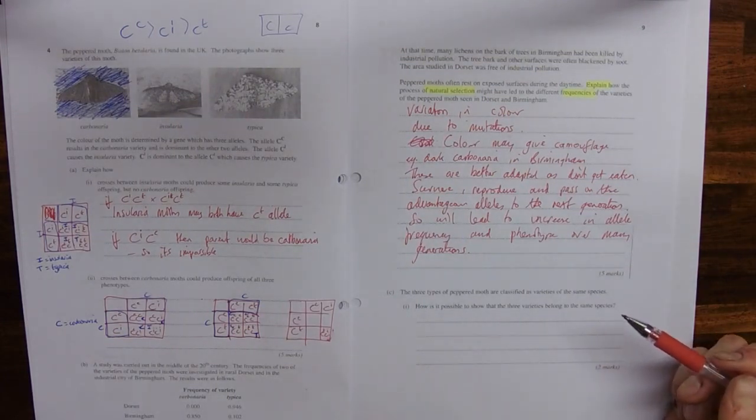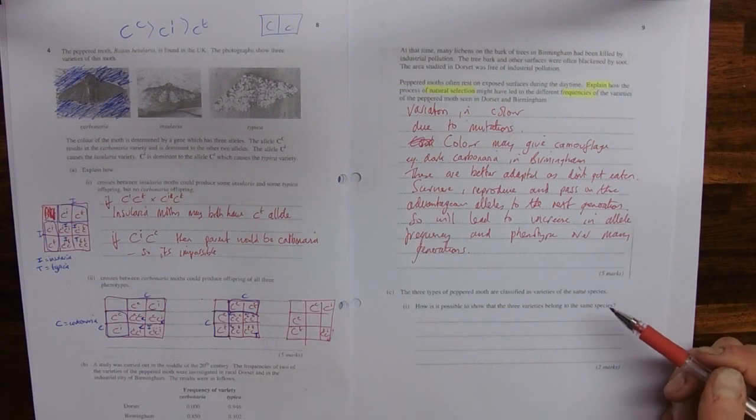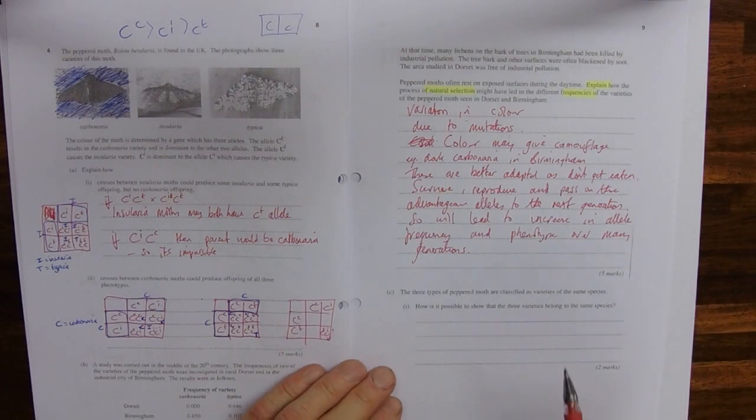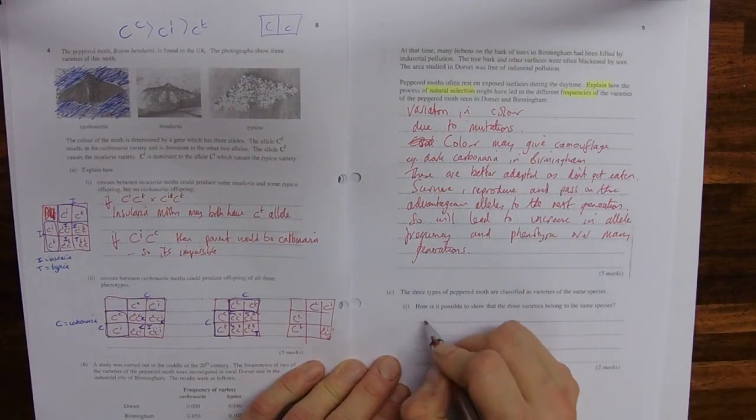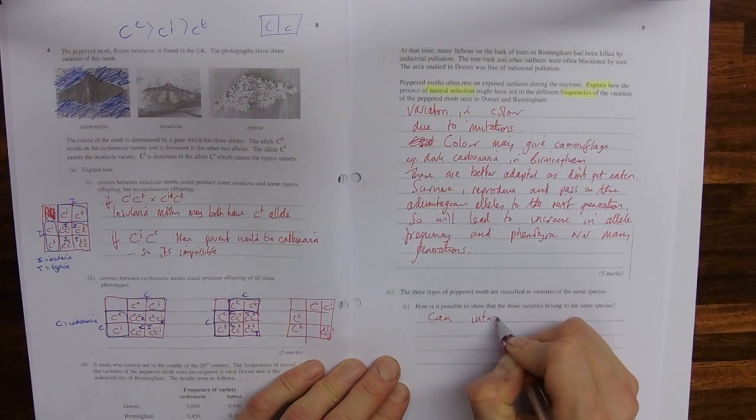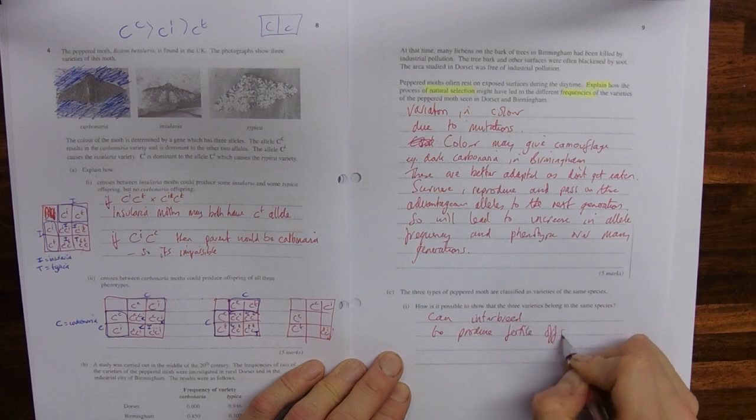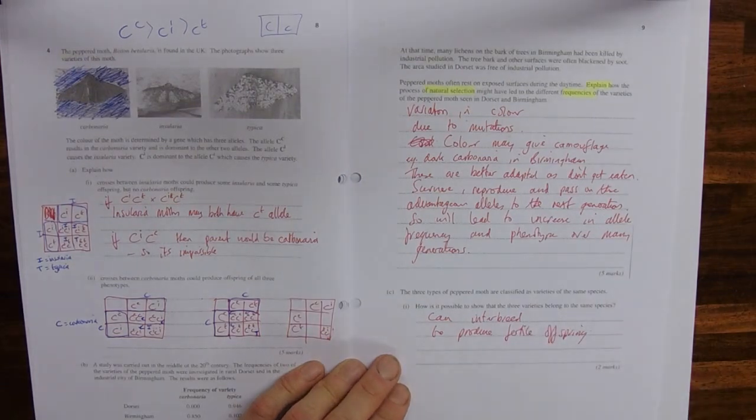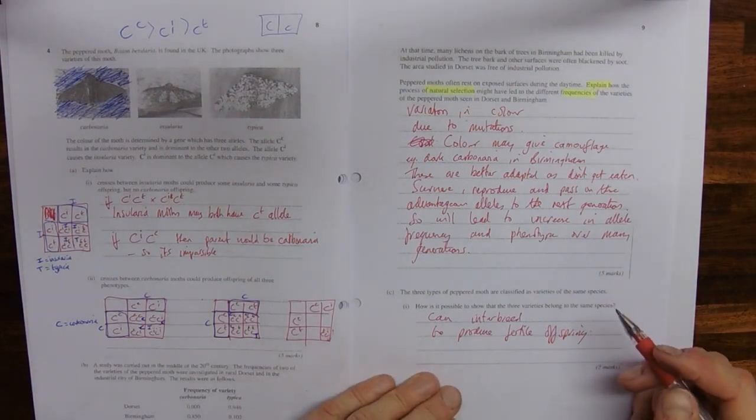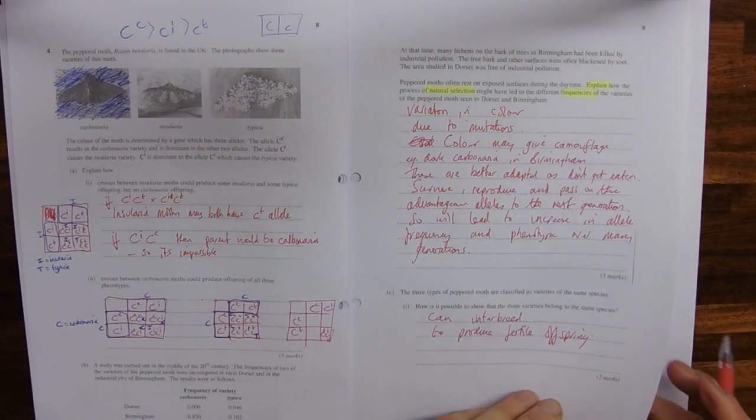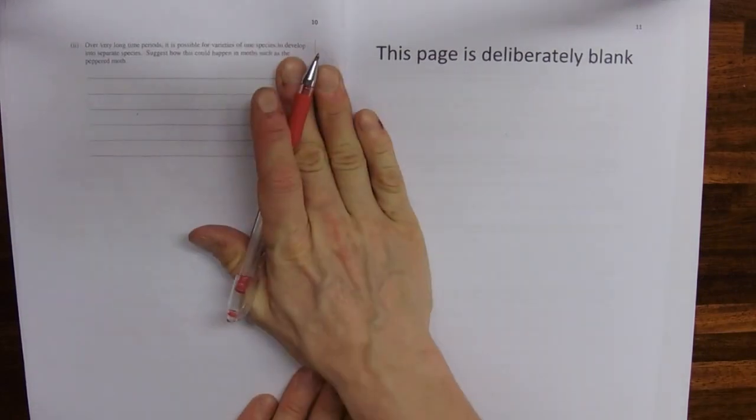Part C: The three types of pepper moth are classified as varieties of the same species. How is it possible to show that they belong to the same species? Two marks, an absolute gift. These can interbreed to produce fertile offspring. So it can be crossed to give fertile offspring. A nice gift of two marks from us to you.